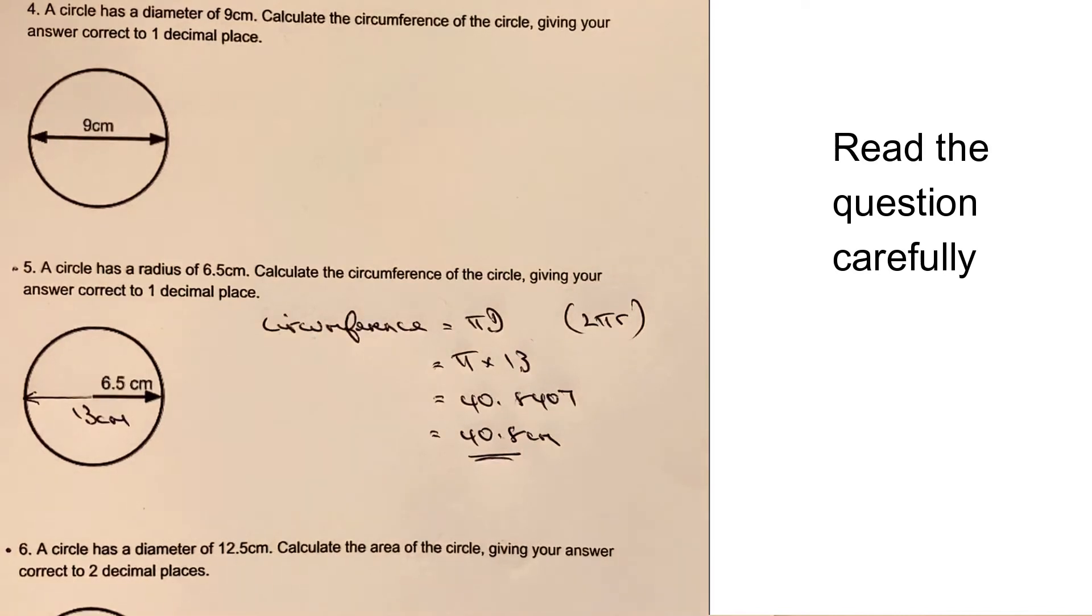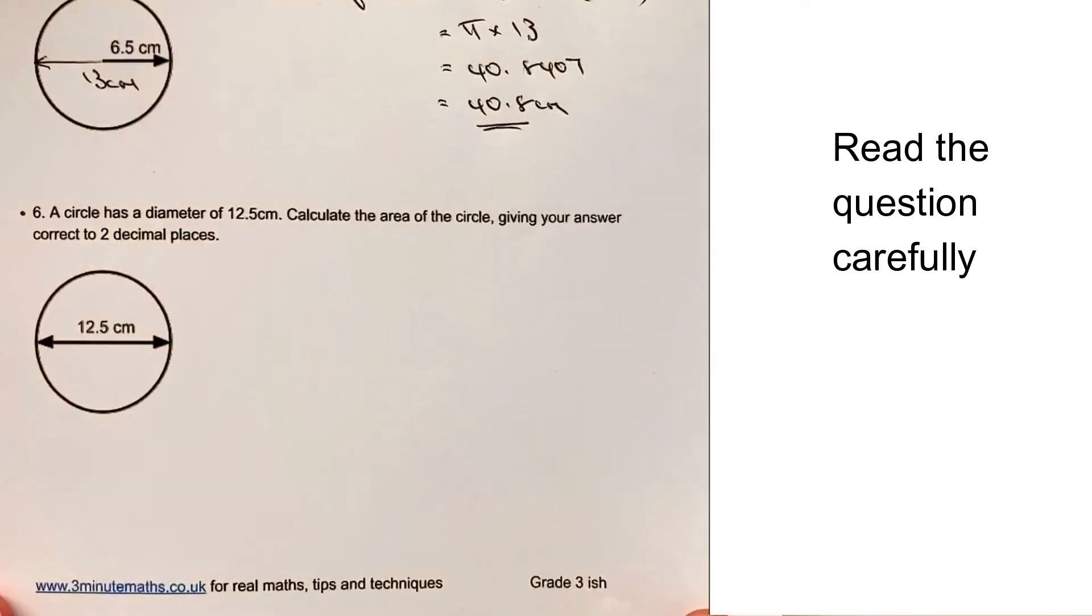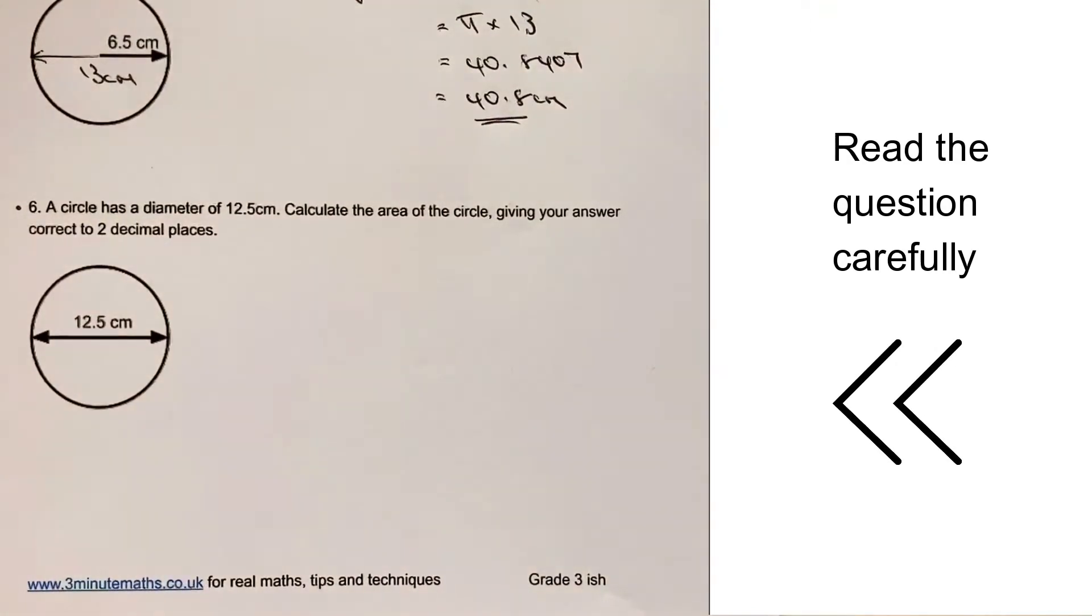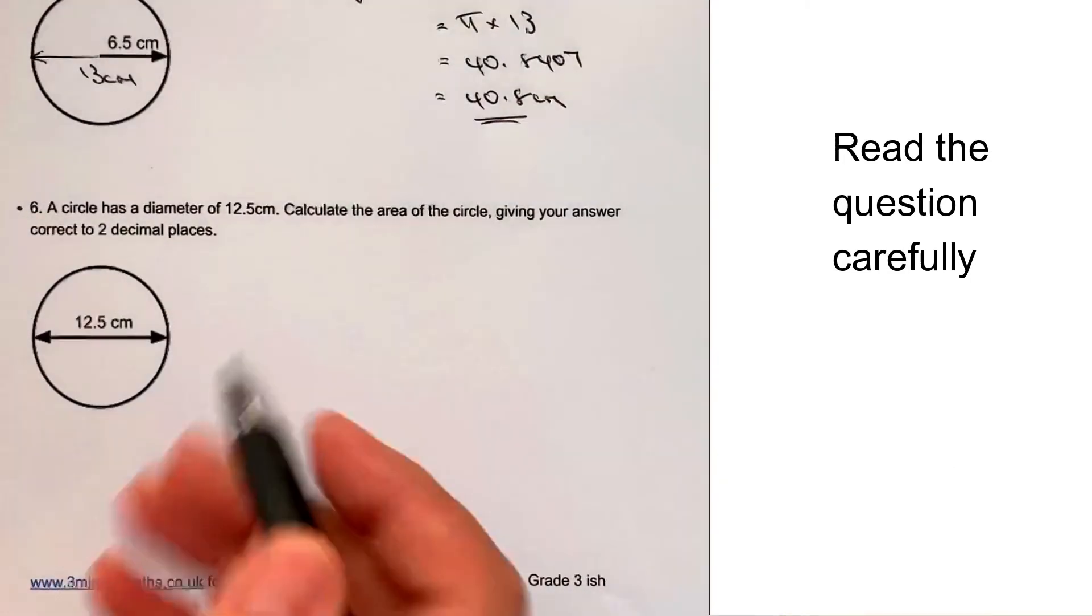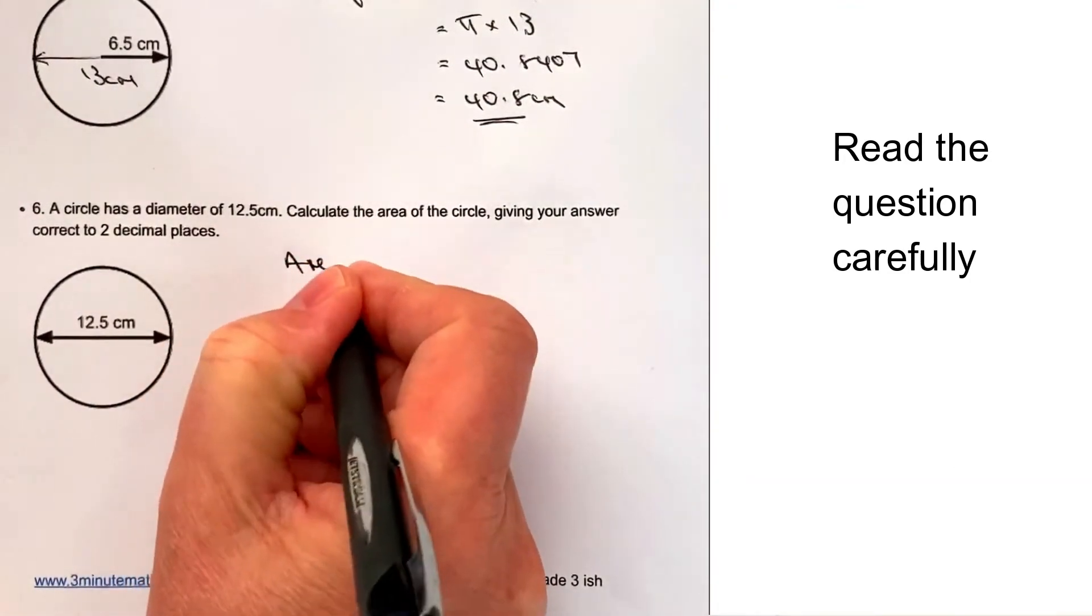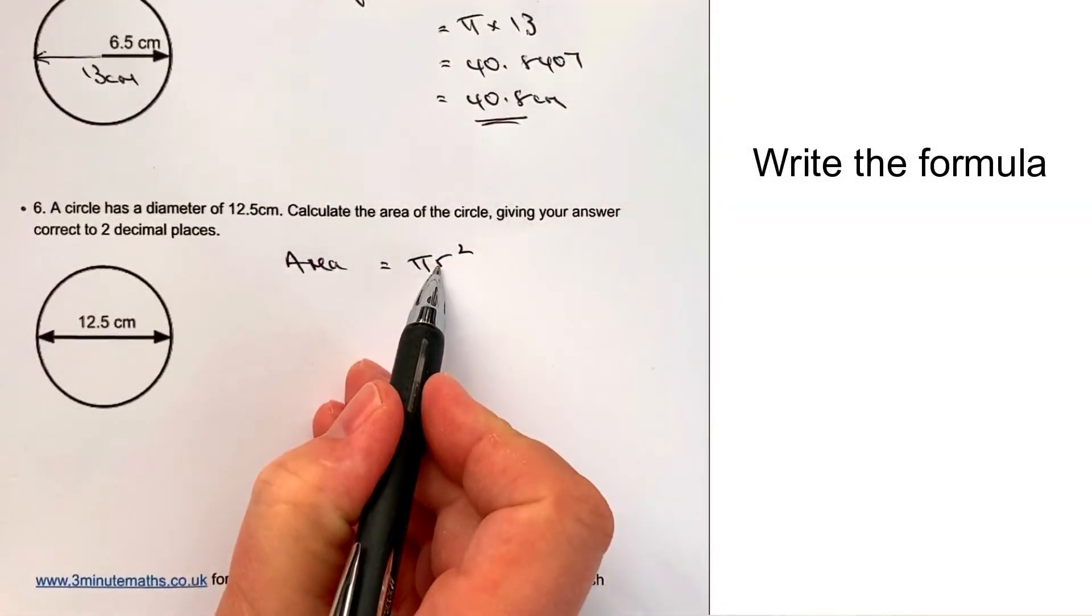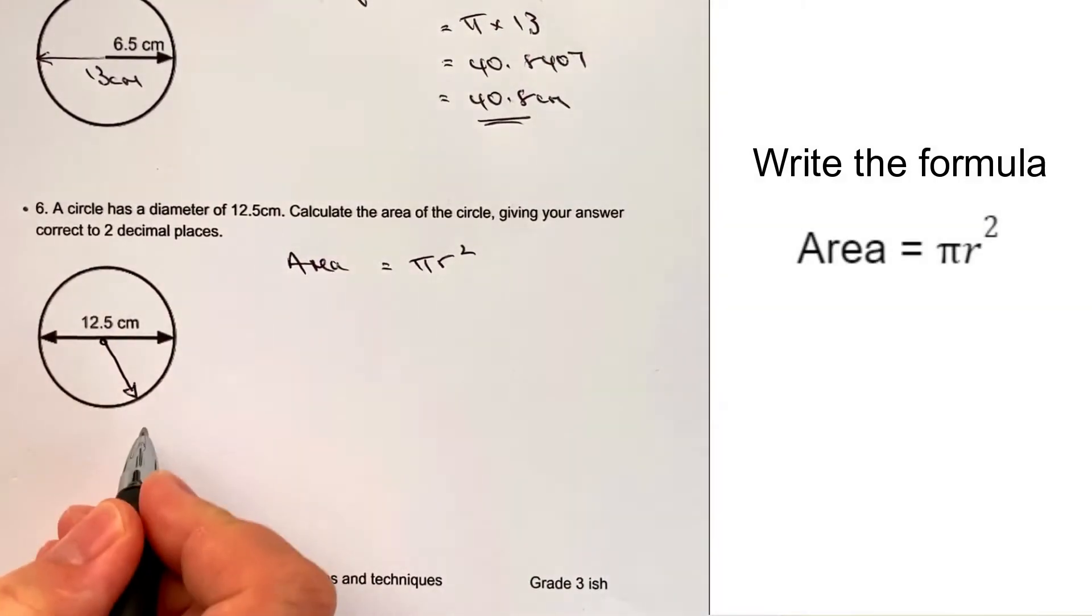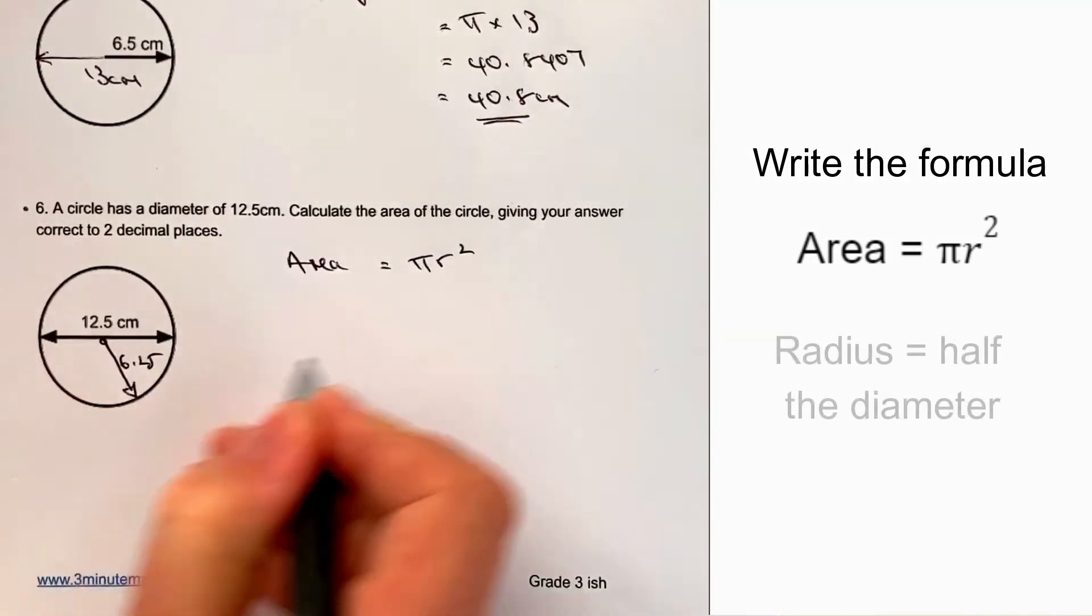In question number six, we've got a circle. This time, it's got a diameter of 12.5 centimetres. And we're being asked to calculate the area of the circle. The formula for the area of the circle is area equals pi r squared. Now, r is actually the radius. So what I'm going to do is mark on this the radius of the circle, which is half of the diameter, which is 6.25.